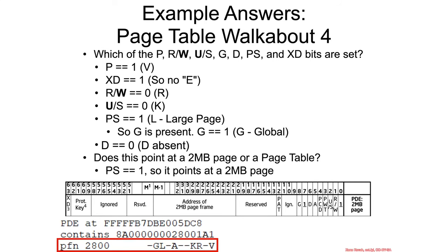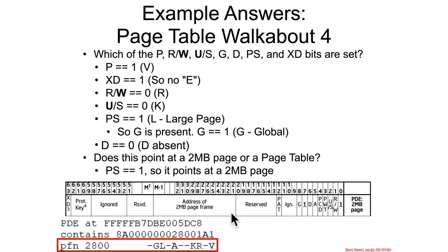How did I interpret my entry and how should you have interpreted yours? The present bit is equal to 1 on mine — you can see that right there. XD is equal to 1, so we finally see something with the most significant bit set. Read/write is 0, so this is read only — you can see an R here instead of the W we've seen before. US is kernel, K.